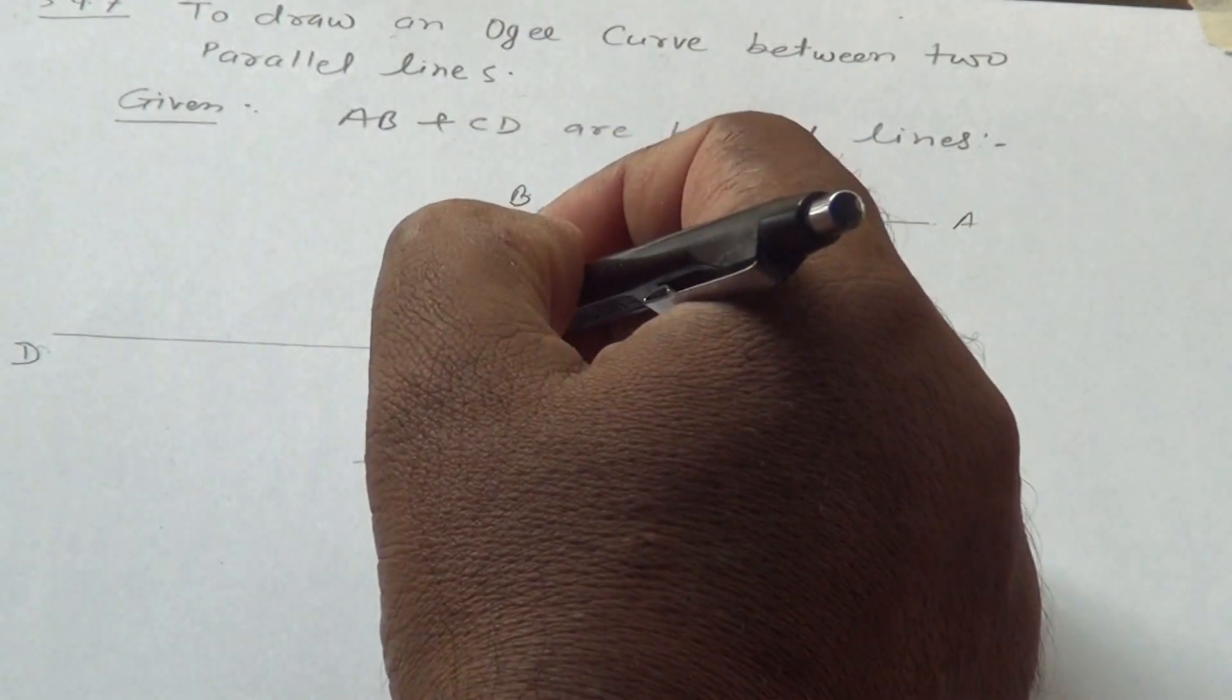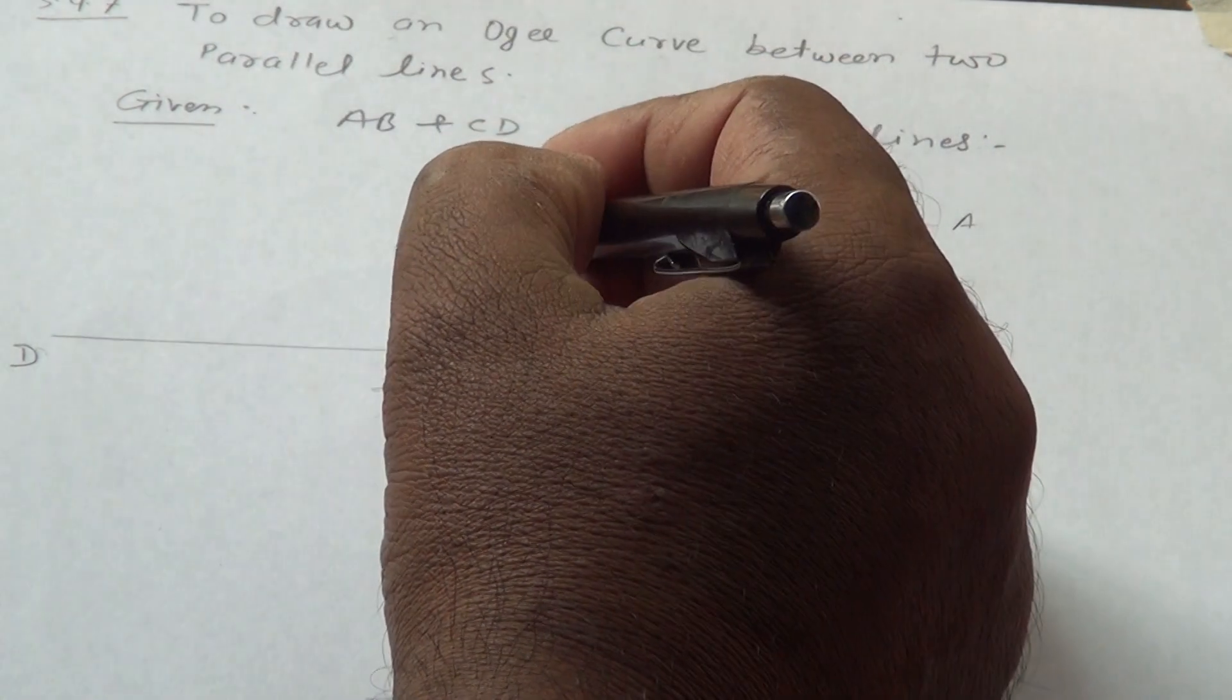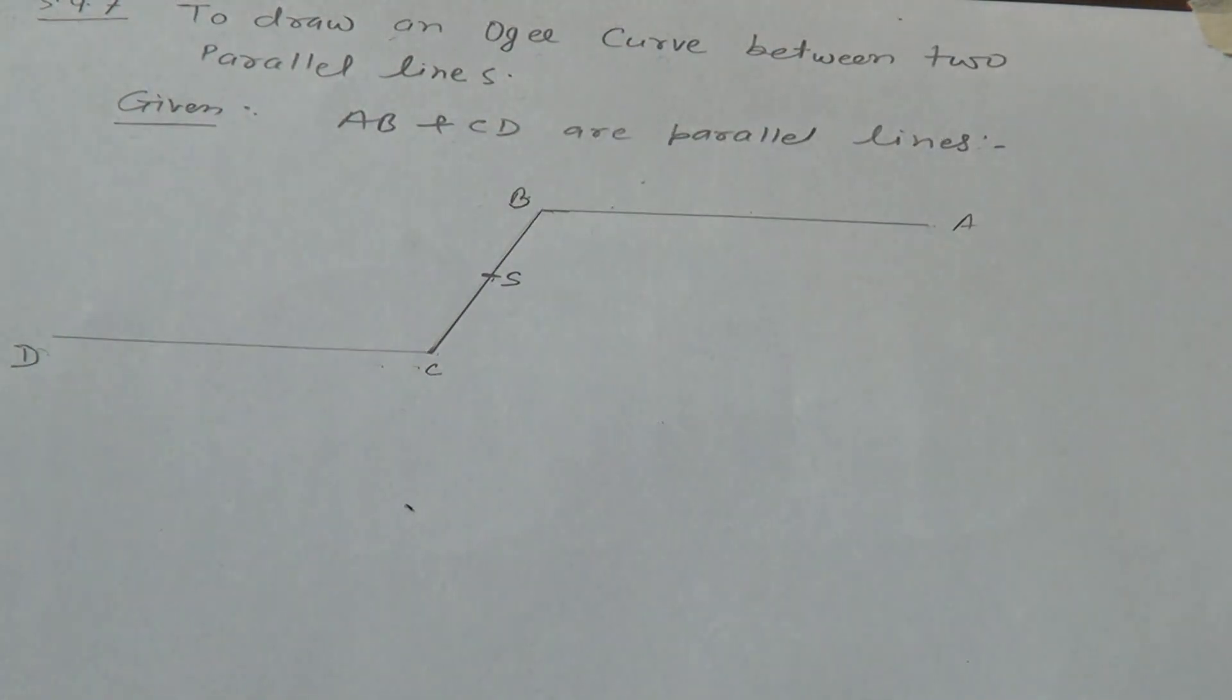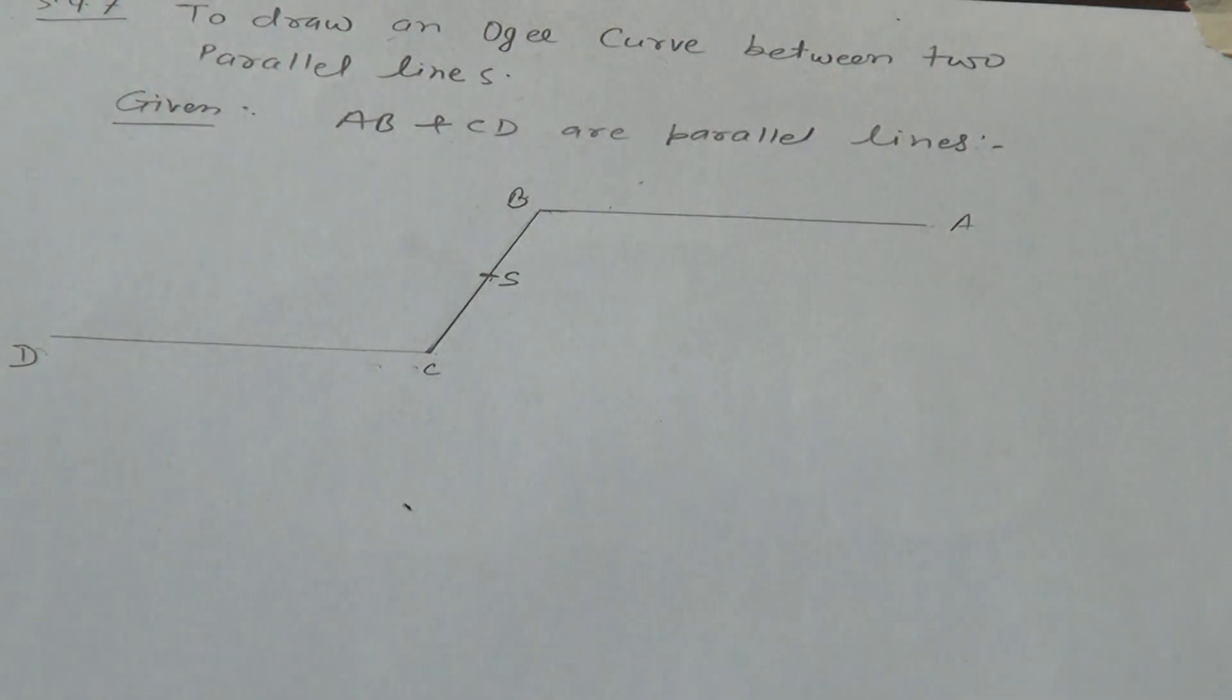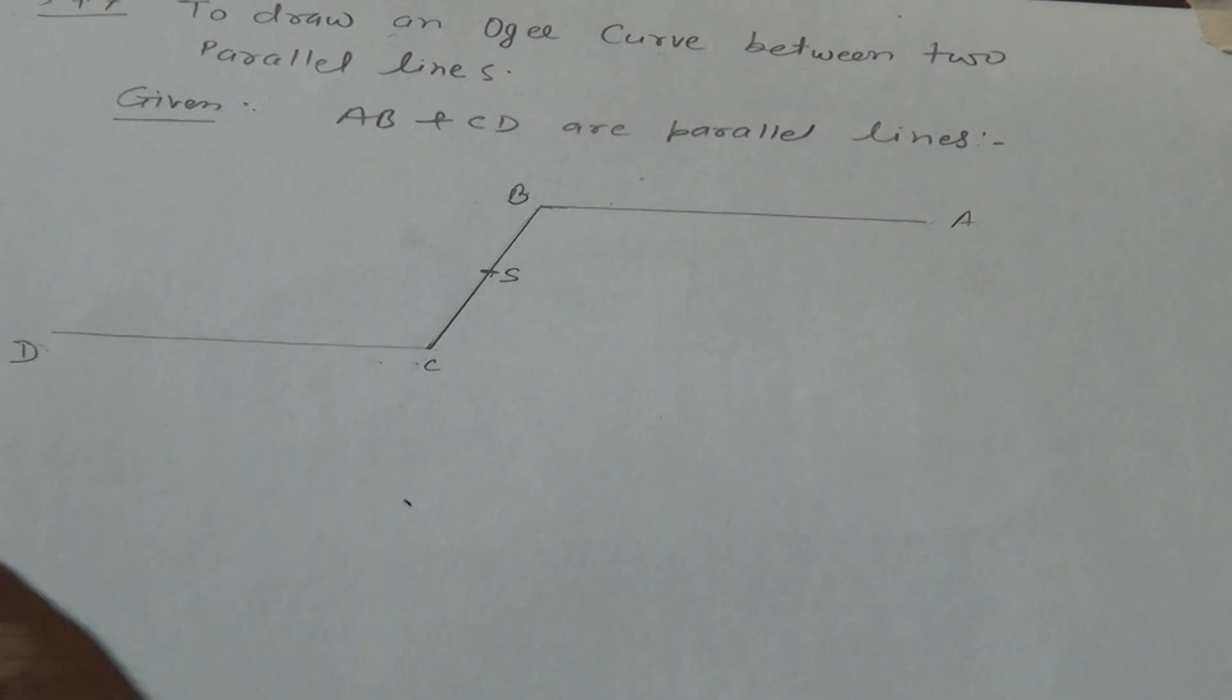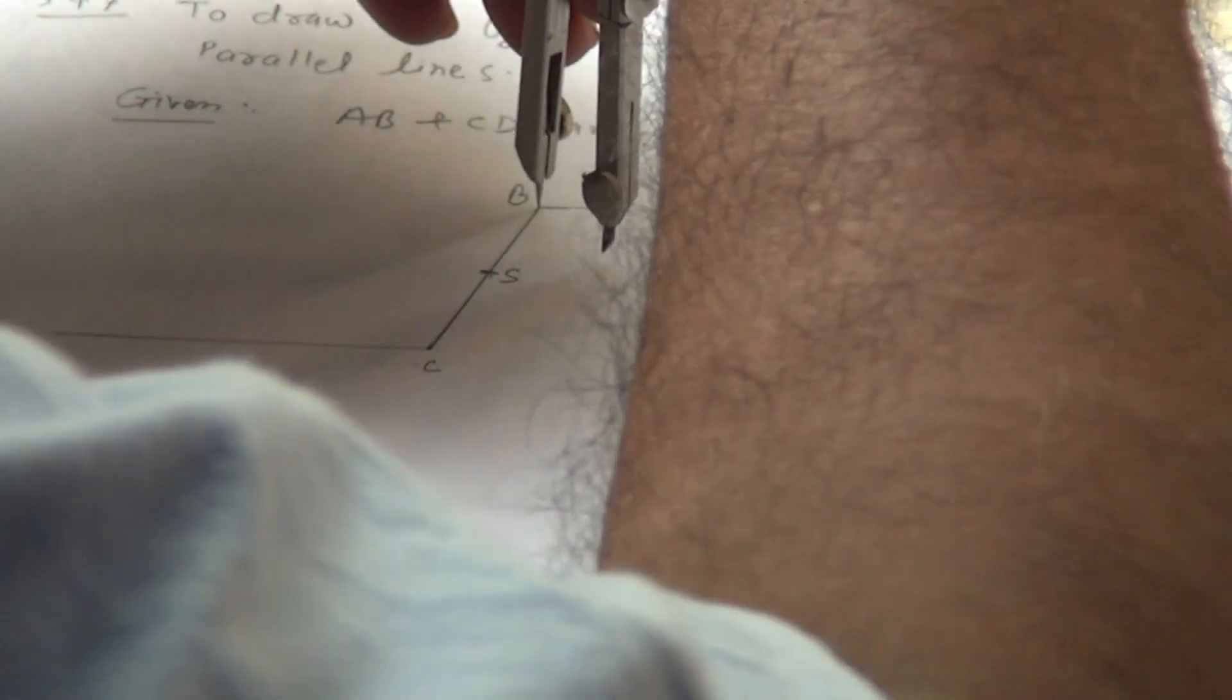Given AB and CD are parallel lines. Now BS line perpendicular. Bicycle BS line perpendicular bicycle, this line.